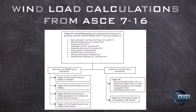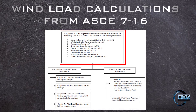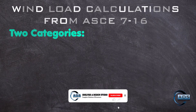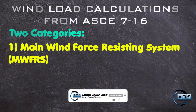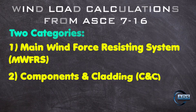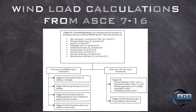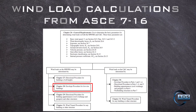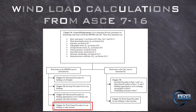This chart shows the distribution of the wind provisions. Chapter 26 covers all general requirements, elements, and parameters for wind load calculations. There are two categories for which wind loads are calculated: the first one is the main wind force resisting system, and the second one is components and cladding. There are three methods to determine wind loads on structures: the first is the directional procedure for any building height, covered in chapter 27; the second is the envelope procedure for low-rise buildings, covered in chapter 28; and the third is the wind tunnel procedure for any type and height of building or structure, covered in chapter 31.